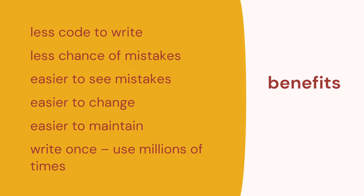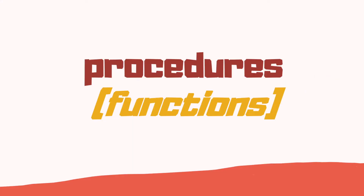The benefits of using this code once means that we have to write less code, we've got less chance of mistakes and they're easier to find, the code is easy to change and maintain, and we've written that code once and can use it as many times as we like. That's why we like functions, otherwise called procedures.